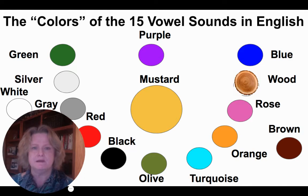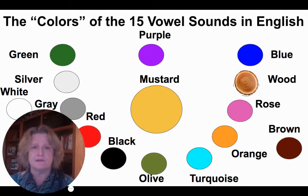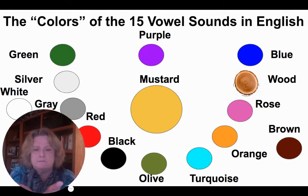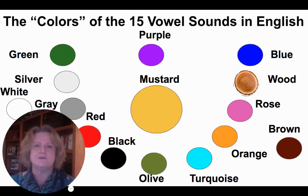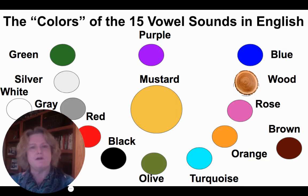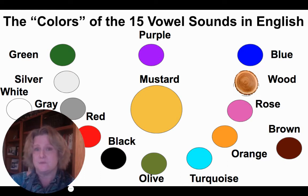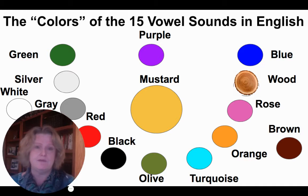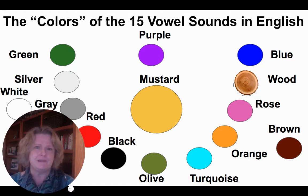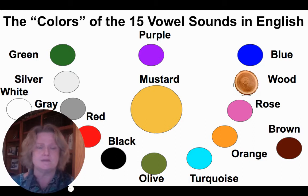Mustard is in the middle — Uh. Purple is high up in the middle — ER. Your tongue is scooped up like a spoon but held still — ER. It's always together with an R and can be spelled many ways: I as in bird and girl, EA as in learn, O as in word, world, and work. A very common mistake is to say 'work' instead of 'work' with the ER sound.